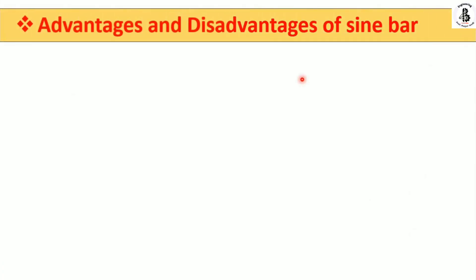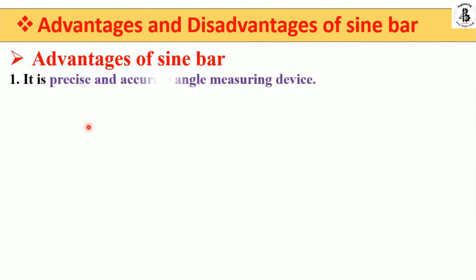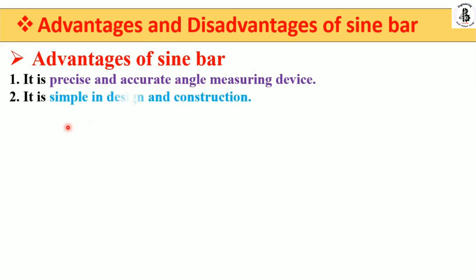Some advantages of the sine bar: it is a precise and accurate angle measuring device; it is simple in design and construction; and it is easily available in any measuring instruments shop.